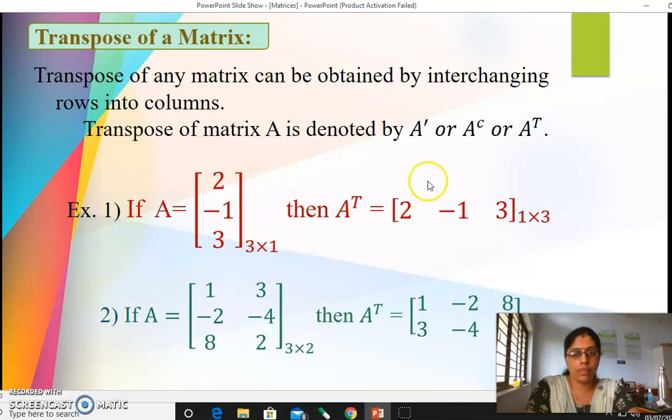So now your first row becomes first column, second row becomes second column, and third row becomes third column. So that column matrix will get replaced or is interchanged into a row matrix. See your order will again get interchanged: three by one becomes one by three matrix.